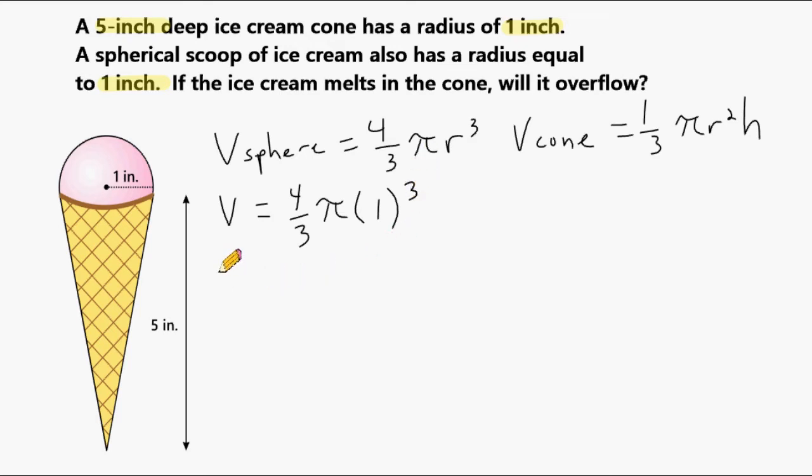So now we write 4/3 times pi. And we have 1 cubed and 1 times 1 times 1 is 1, which means I really don't have to write anything because anything times 1 is that thing. So 4/3 pi times 1 would be 4/3 pi. This is the volume of the sphere in terms of pi. That's how many cubic inches would be occupied inside the sphere.